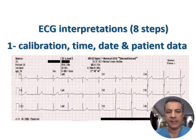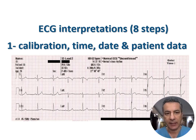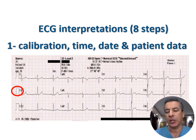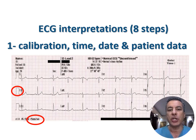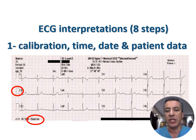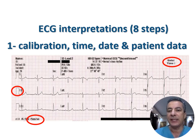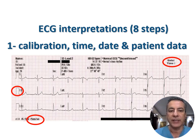ECG interpretation is simplified in eight steps. Step one is calibration, time, date, and patient data. ECG calibration is crucial for accurate interpretation of amplitude; proper calibration, whether done manually or automatically, should be insisted upon. Paper speed is an essential factor for ensuring precise time measurement. ECG is a highly dynamic tool, and annotating the date and time is vital for establishing the chronological order of events, which is of utmost importance in clinical assessment.